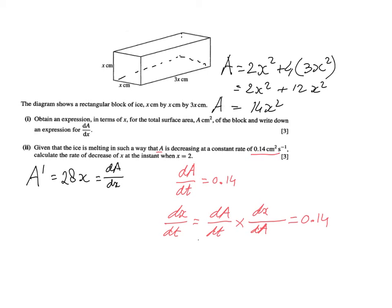So let's find dA/dx, because they are asking at the instant when x is 2. So if we find dA/dx when x is 2, that is 28 times 2, which is 56. So dA/dx is 56. That makes dx/dA, the reciprocal, 1 over 56. So 0.14 times 1 over 56, or 0.14 divided by 56. You can work it out on your calculator. It's 0.0025.